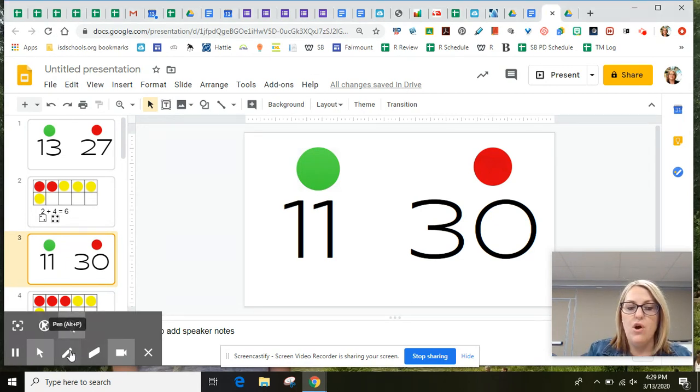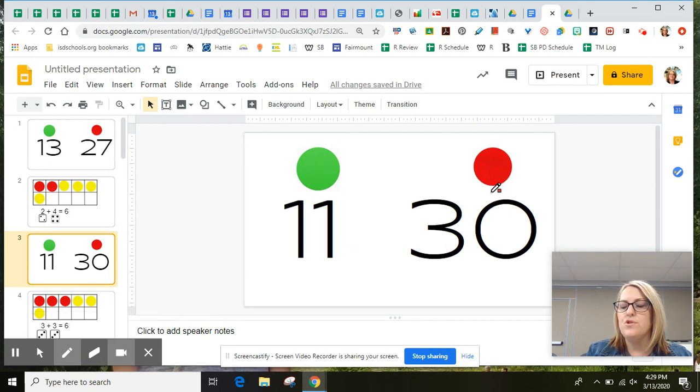Remember, we're gonna count on from the number under the green dot and count to the number under the red dot. Our first number is 11, and we're going to stop at the number 30.